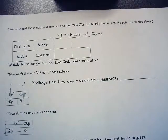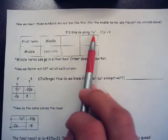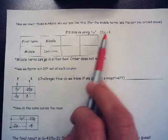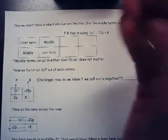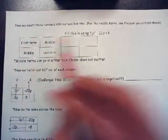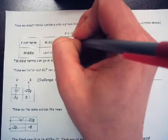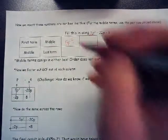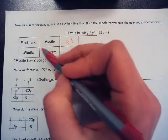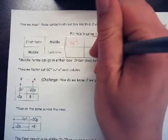Now we insert those numbers into our box. We're filling it in using the equation 5p squared minus 22p plus 8. When we fill in the box, we always put the first term here — so 5p squared goes in the top-left. Then going diagonal, my last term — just 8 — goes in the bottom-right box.